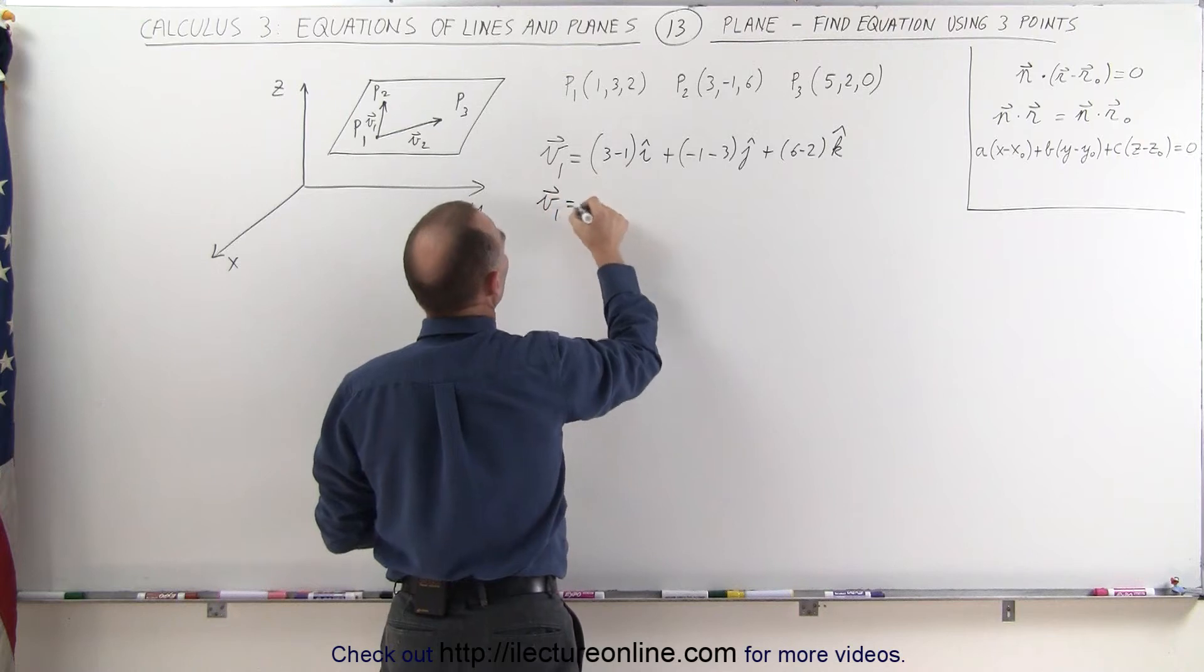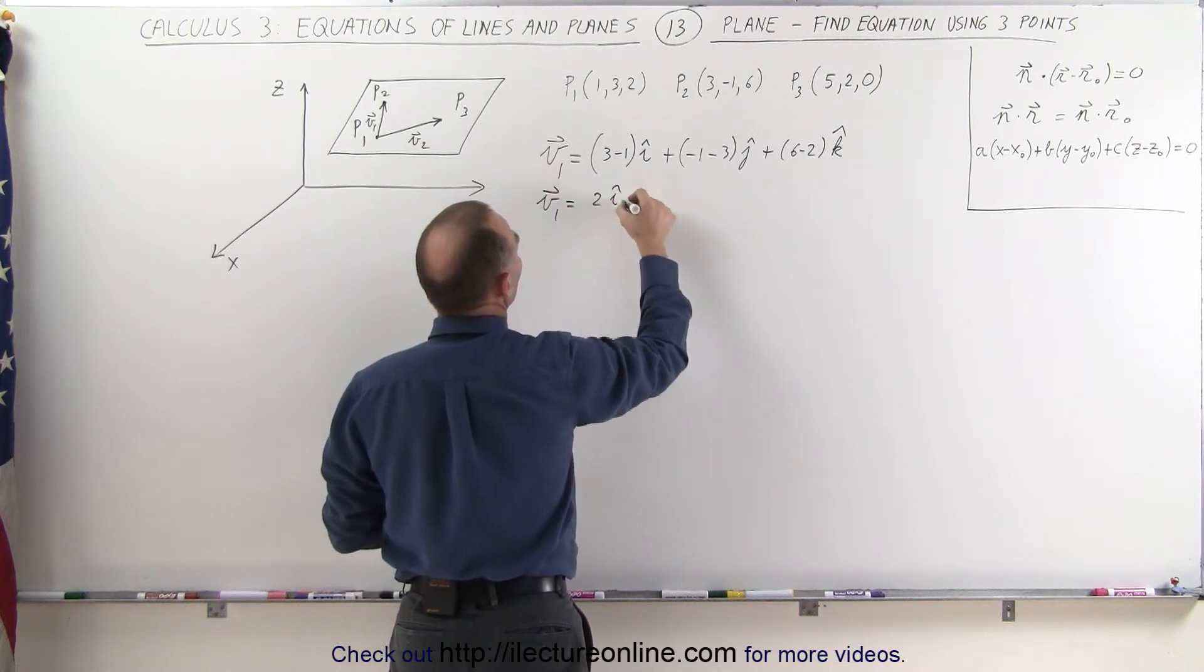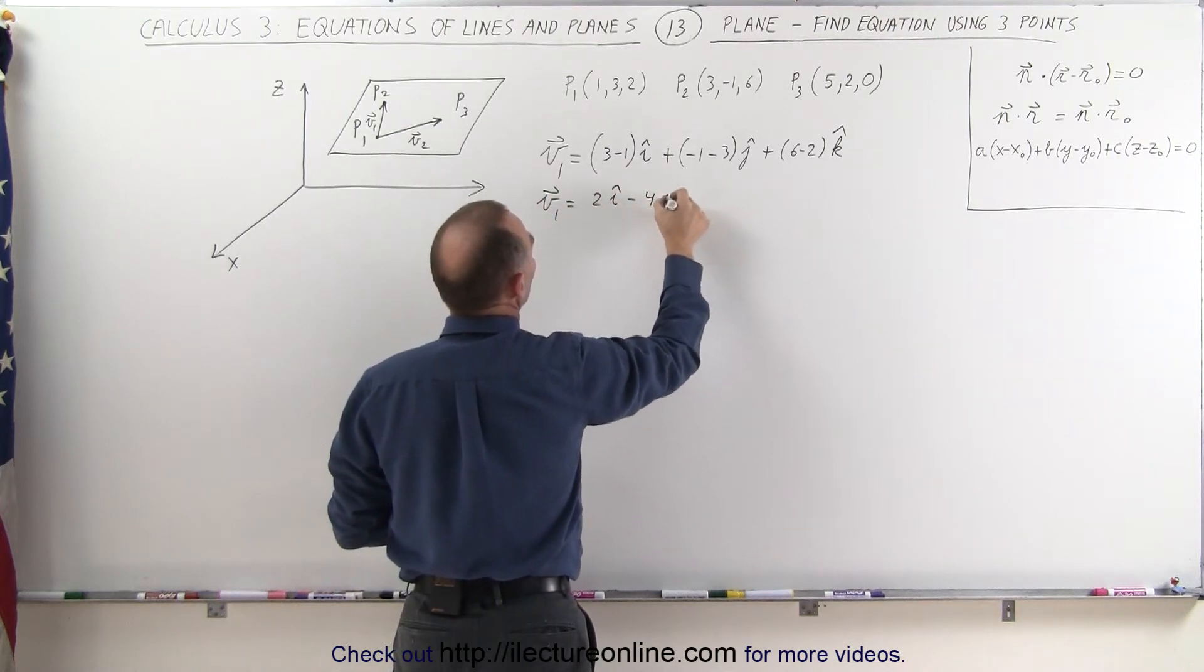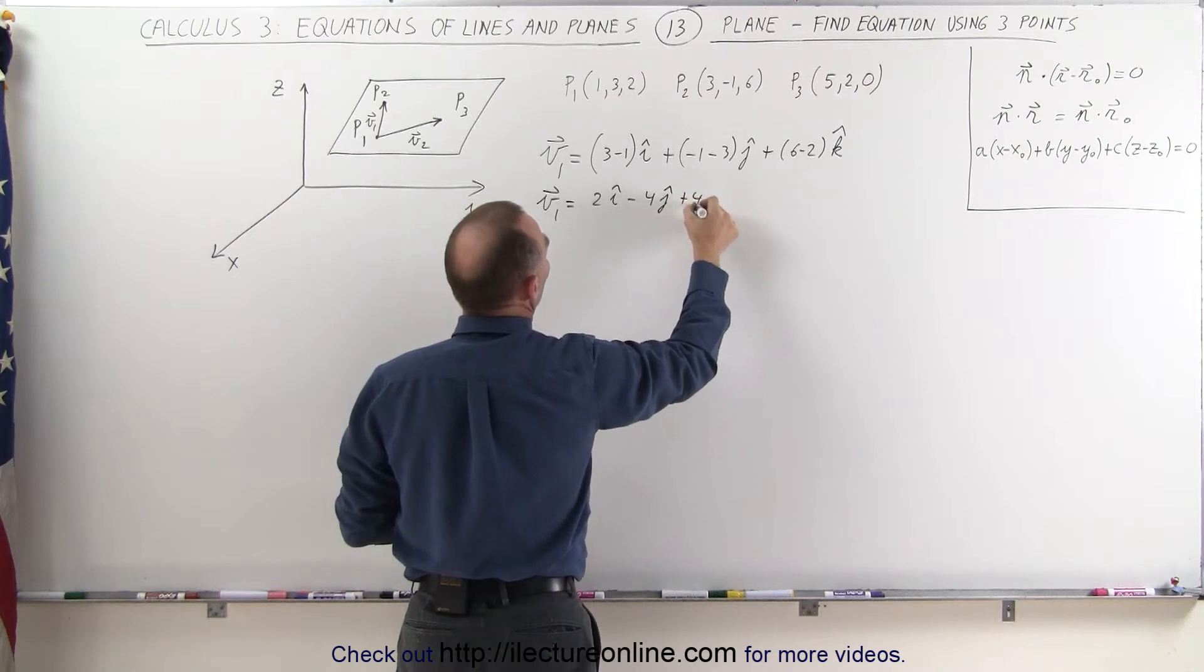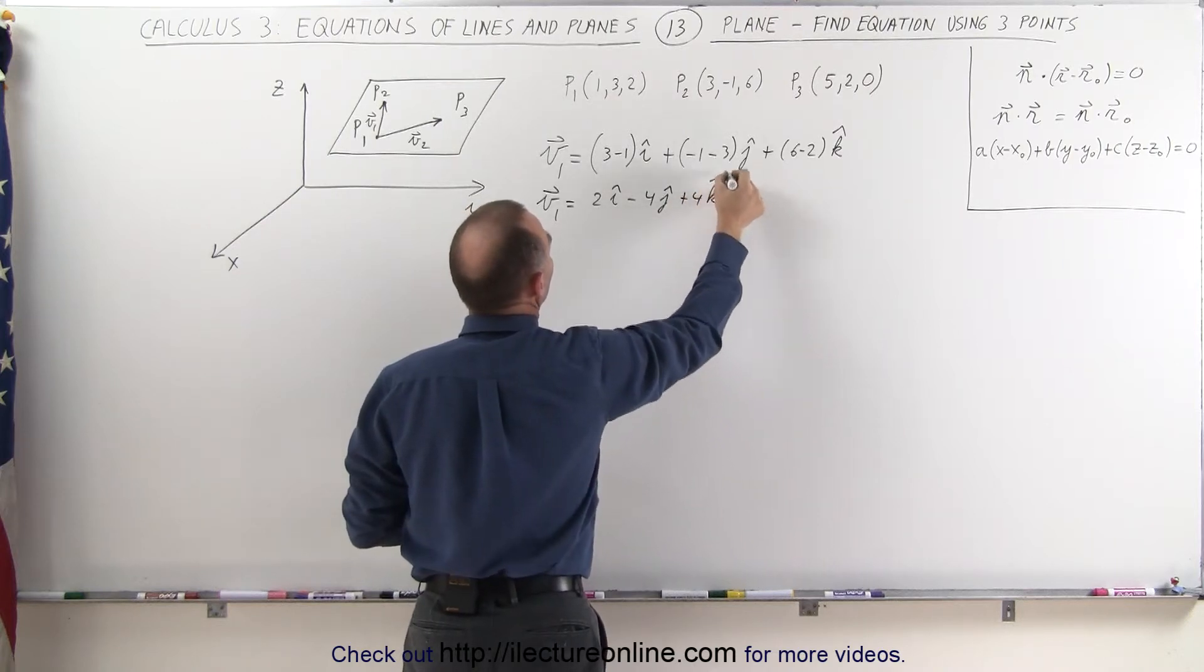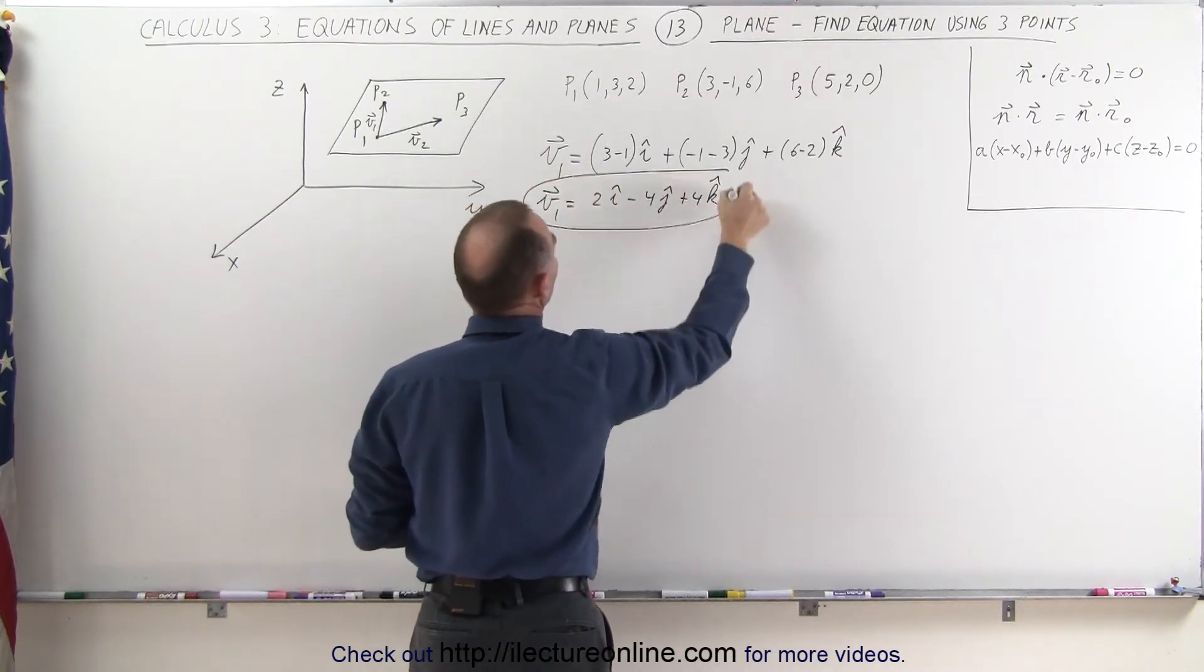And then we get plus 6 minus 2 in the k direction. Now notice when I simplify that, I get my first vector v1, which is equal to 2 in the i direction, minus 4 in the j direction, and plus 4 in the k direction. There's my first of the two vectors that I need.